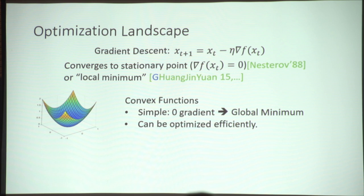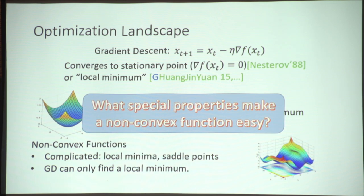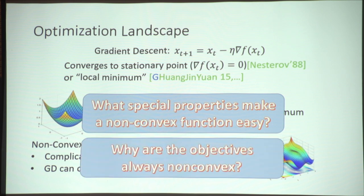For non-convex functions, things are much more complicated. They can have local minima and saddle points, so we only know that gradient descent can find a local minimum. Why can we say that is good enough for the non-convex functions we're trying to optimize? A lot of research on optimization landscape tries to understand what special properties make a non-convex function easy to optimize. A simpler question first: why do we have to deal with non-convex objectives, and why is it not easy to rewrite them to be convex?